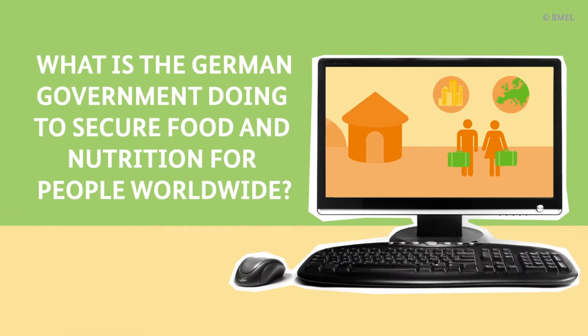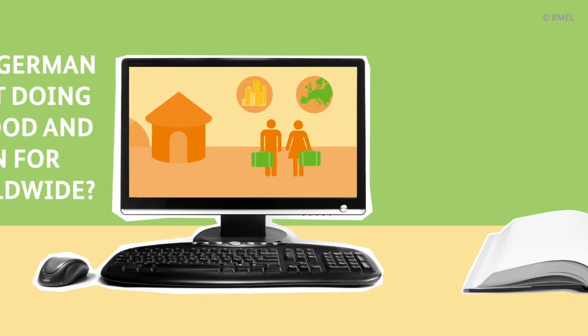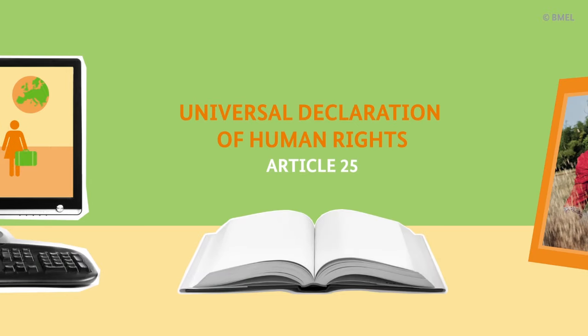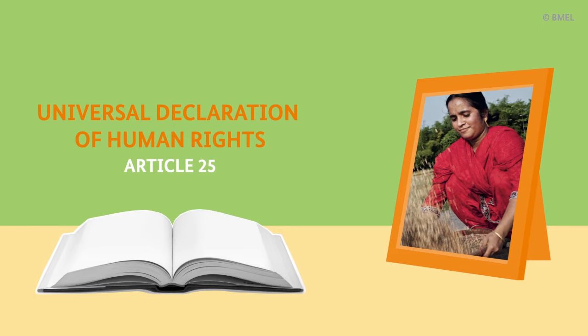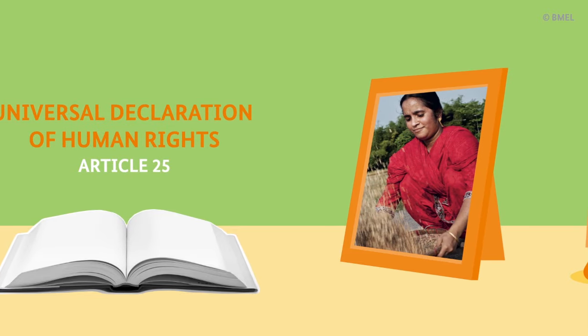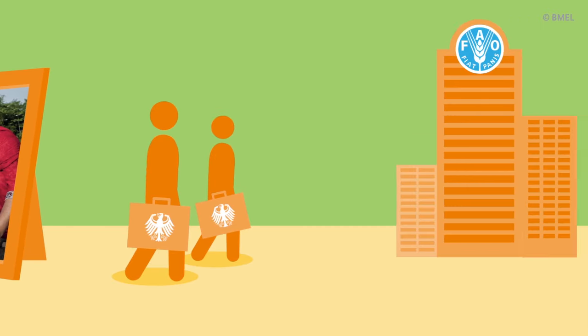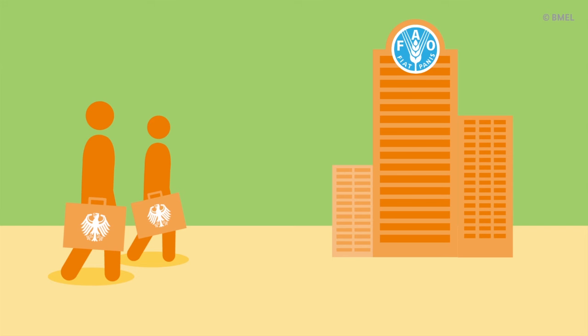And what is the German government doing to secure food and nutrition for people worldwide? The human right to adequate food obliges states to build an enabling environment for people to be free from hunger and malnutrition. The German government supports the United Nations Food and Agriculture Organization, FAO, and other UN bodies in their work to progressively realize the right to food.